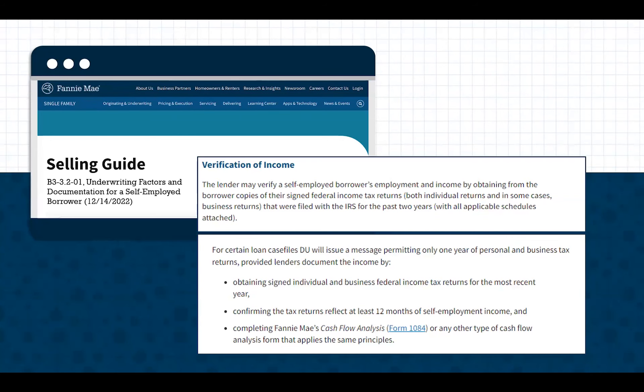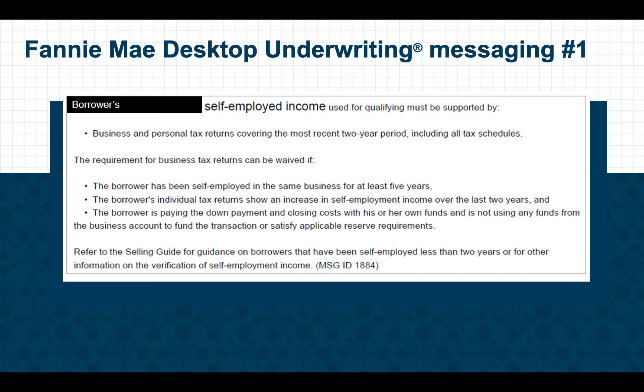Let's take a closer look at the two different messages you may receive through DU. The first possibility is a message that requires two years of personal and business tax returns. However, the business tax returns can be waived if the borrower has been self-employed in the business for at least five years, and the individual tax returns show an increase in self-employed income over the past two years, and the borrower is using personal funds for the down payment and closing costs. Notice how these are AND statements — all three conditions must be met.